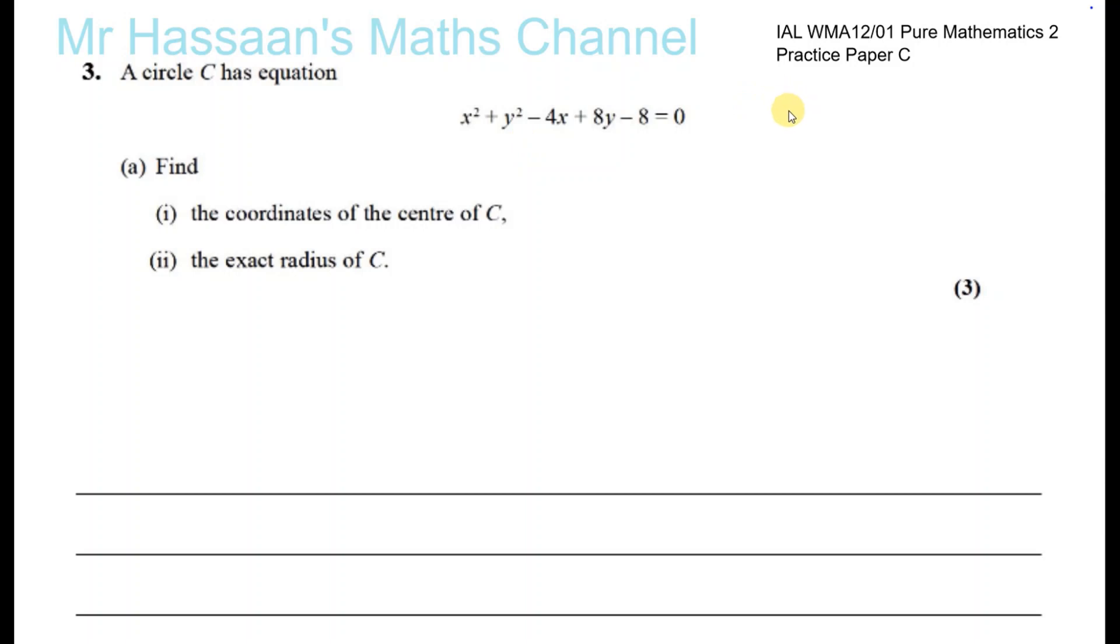Basically you have to make this circle into the form x minus a squared plus y minus b squared equals r squared. And the center of the circle is going to be ab. The radius is going to be r, which is the square root of what's left on the other side. I use completing the square.